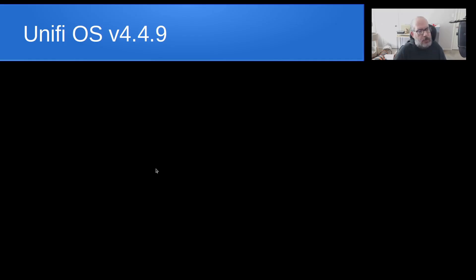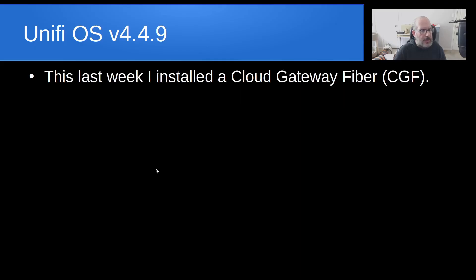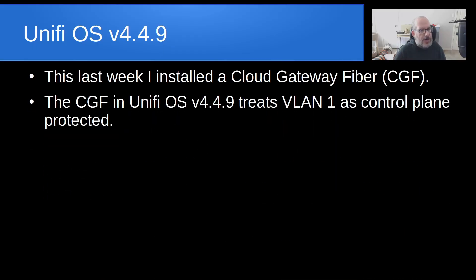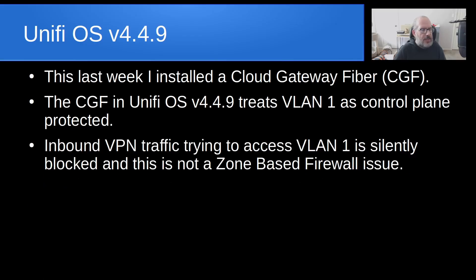Come UniFi OS version 4.4.9, which is the latest on the Cloud Gateway Fiber, you run into something kind of interesting. I installed a new Cloud Gateway Fiber this last week. The Cloud Gateway Fiber is running UniFi OS version 4.4.9, and that treats VLAN 1 as what we call control-plane protected. What that means is that inbound VPN traffic trying to access your VLAN 1 is silently blocked. This is not a zone-based firewall issue, and it's also not a legacy firewall issue.